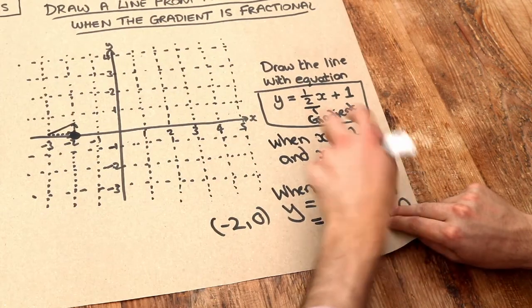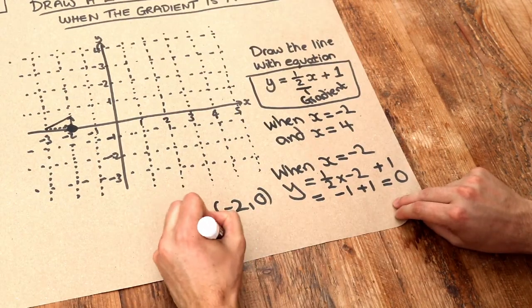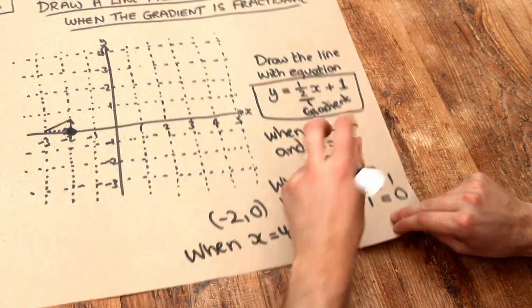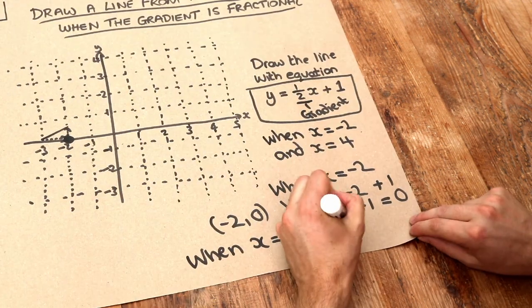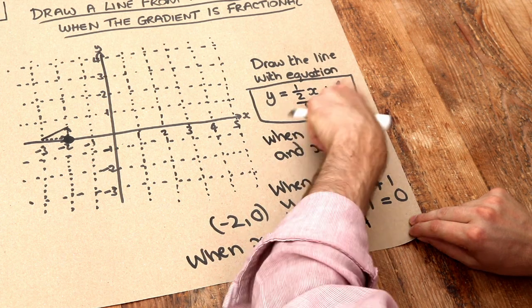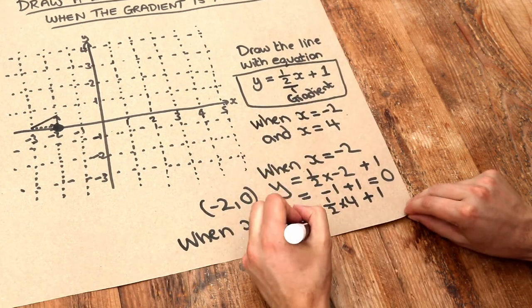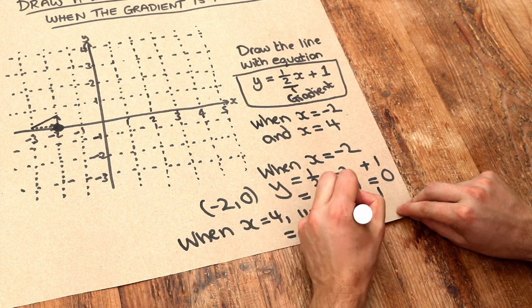When x is 4 at the other end, y is going to be, if we substitute in, half times 4 plus 1. Half times 4 is 2, because half of 4 is 2, plus 1 is 3.